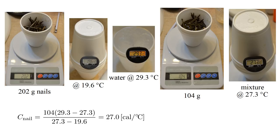The heat capacity of the nails is the heat they absorb, divided by their temperature change. The absorbed heat equals the heat given up by the warm water. The heat lost by the water is its heat capacity, numerically equal to its 104 gram mass, times its temperature change, 29.3 minus 27.3. The nails temperature change is 27.3 minus 19.6.